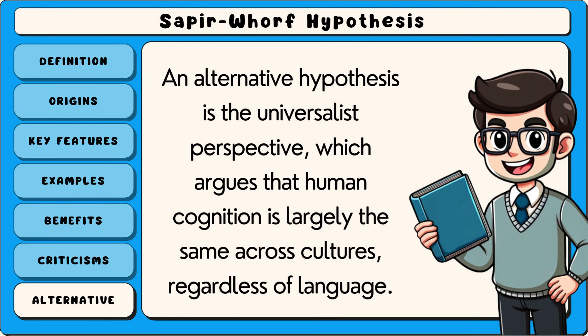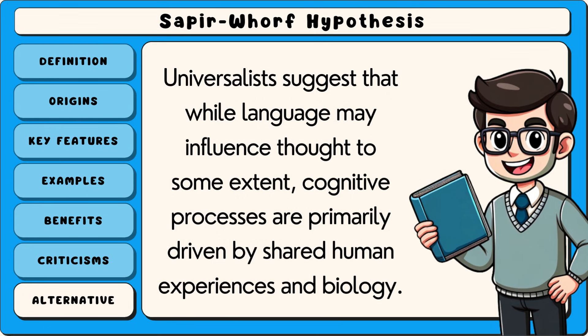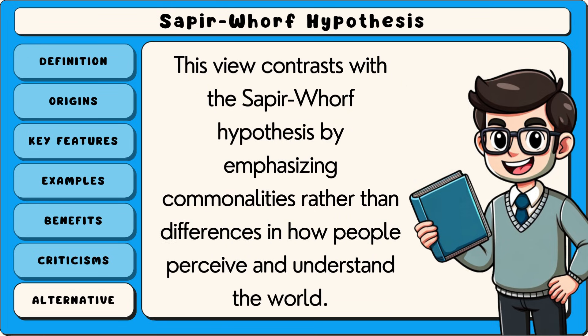An alternative hypothesis is the Universalist perspective, which argues that human cognition is largely the same across cultures, regardless of language. Universalists suggest that while language may influence thought to some extent, cognitive processes are primarily driven by shared human experiences and biology. This view contrasts with the Sapir-Whorf hypothesis by emphasising commonalities rather than differences in how people perceive and understand the world.